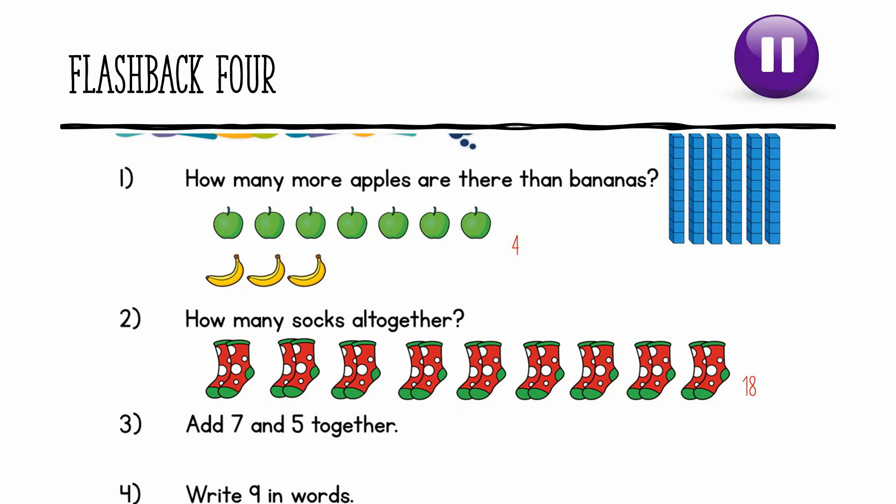Question 3. Add 7 and 5 together. 7 in my head, 5 fingers up. 7, 8, 9, 10, 11, 12. 7 add 5 equals 12.